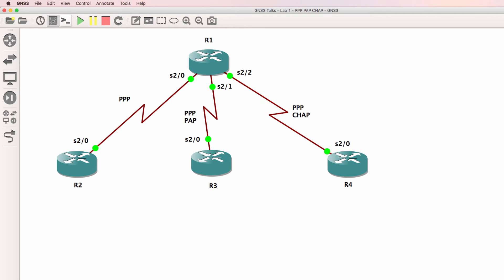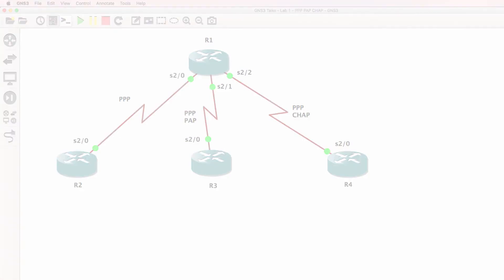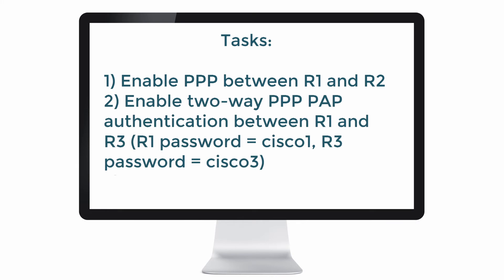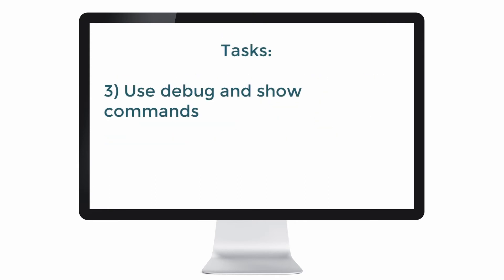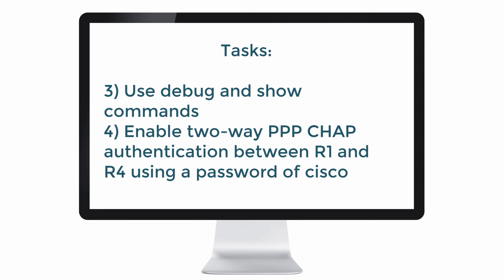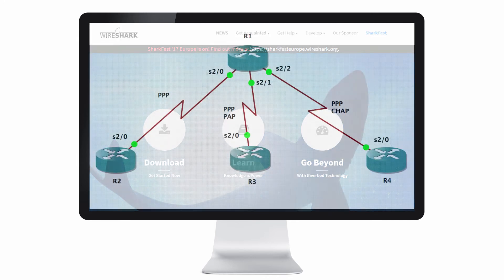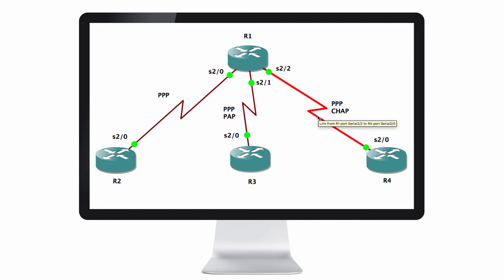In this topology you'll need to configure three variations of PPP encapsulation: enable PPP between router 1 and router 2; enable two-way PPP PAP authentication between router 1 and router 3, where router 1 uses a password of Cisco1 and router 3 uses Cisco3; and enable PPP CHAP authentication between router 1 and router 4. We'll use debugs and show commands to verify PPP PAP and CHAP negotiation, use Wireshark to view the negotiation, enable EIGRP in Autonomous System 100, and prove all devices can ping each other. Additional resources on PPP CHAP and PAP authentication are linked below.